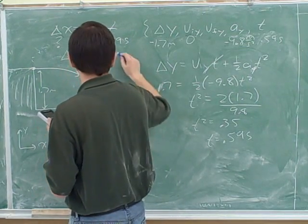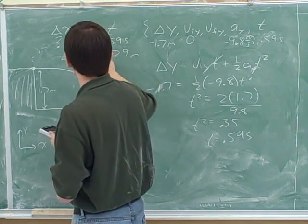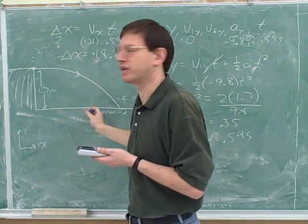Right. The way I rounded, I got 18.29. So somewhere around there. And that came out positive, which is what we would expect because we're moving in the positive direction.